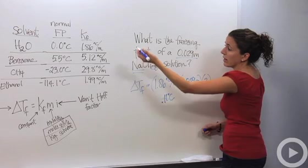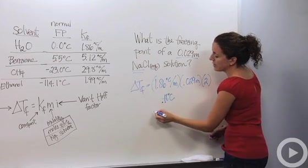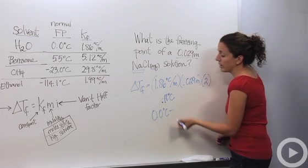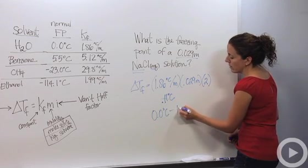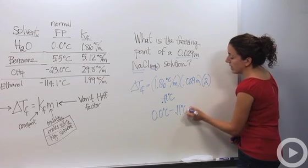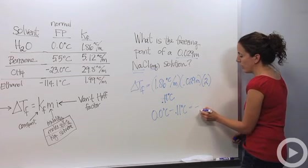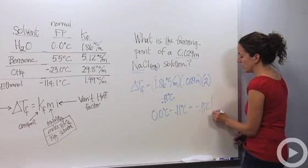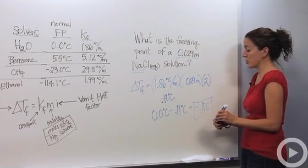Our original freezing point is zero. It's going to lower by 0.11. So our new freezing point is negative 0.11 degrees Celsius, because it dropped that much.